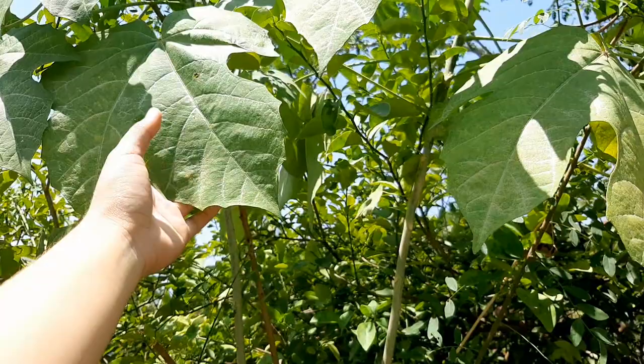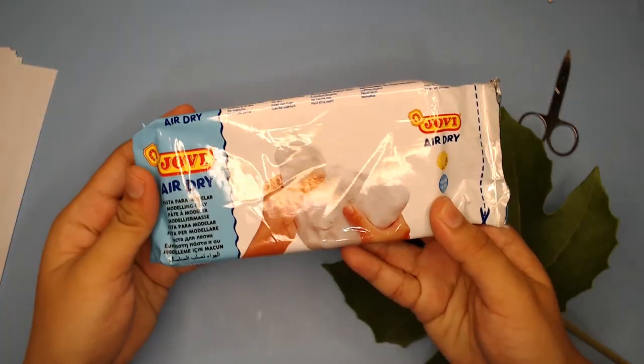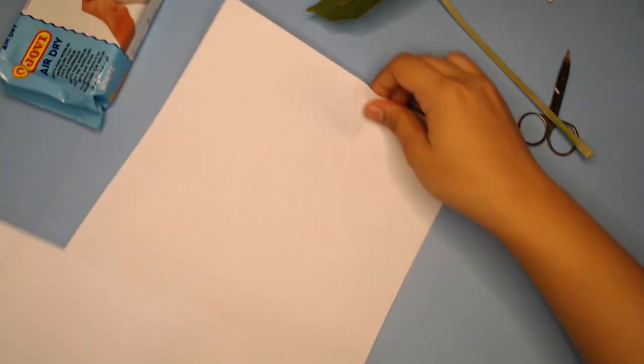First, choose any kind of leaf that you like. Working with Jovi clay is messy, so add scrap paper to protect your table.